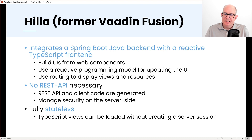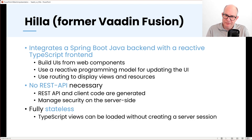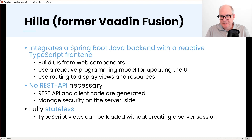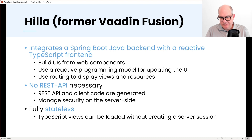The idea of Hilla is that it integrates a Spring Boot Java backend with a reactive TypeScript frontend, usually as a self-contained system where the client and server live in the same project. You can build the UI from web components, use a reactive programming model with LIT on the UI side, and use file-based routing to display views. You don't have to care about the build process — unlike regular SPAs using Webpack or Vite, you just build with Maven and the Hilla plugin handles everything. As already mentioned, you don't need the REST API; it is generated and it is even secure.